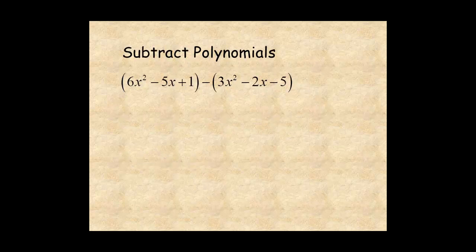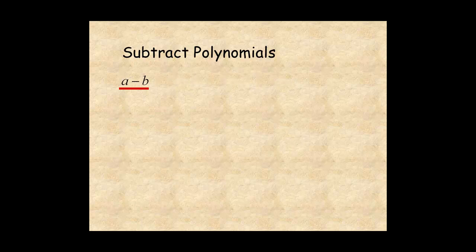To subtract polynomials, remember a previous lesson where you learned the definition of subtraction. To subtract two expressions, add the inverse or opposite of the second expression. For example, 4 minus 9 is equal to 4 plus negative 9.